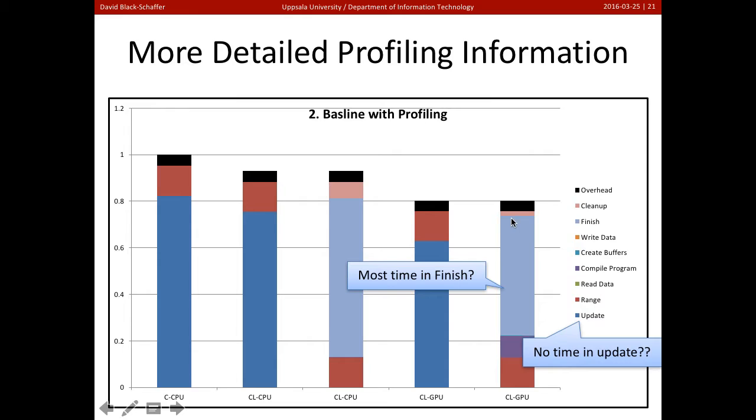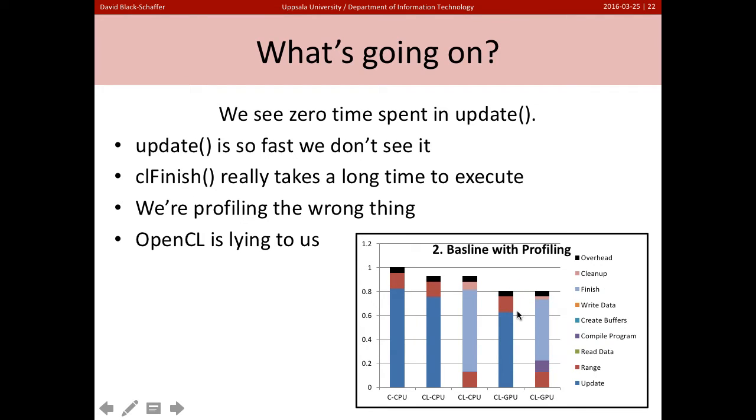What we do see is we're spending almost all of our time in finish. In fact, we're spending time in finish, and we're spending time compiling, and that's all we're doing. So what's going on here? We're not seeing any time spent in update, and we're seeing lots of time being spent in finish. So why is this happening?